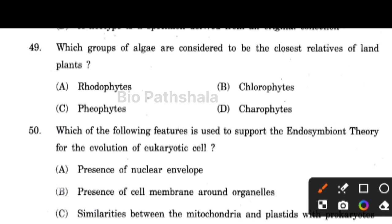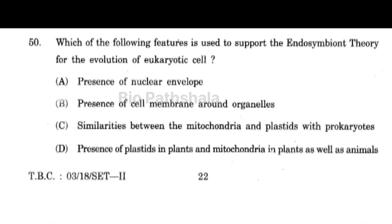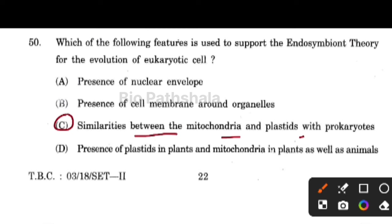Next question: which of the following features is used to support the endosymbiont theory for the evolution of eukaryotic cells? Option number C — the similarity between mitochondria and chloroplasts with prokaryotes; like prokaryotes, they have 70S ribosomes. Their ribosomes and genetic material match prokaryotes, which supports the endosymbiotic theory.